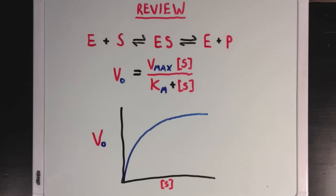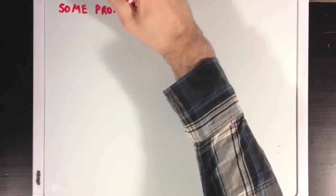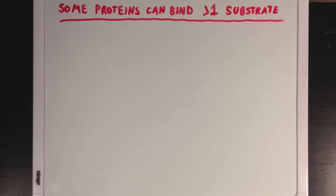Also remember that as you increase substrate concentration, the speed of product formation will level off at its maximum value, as shown on this graph. Now, the first thing that I want to talk about is that some proteins can bind more than one substrate, and not all enzymes have just one active site.